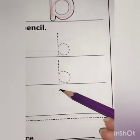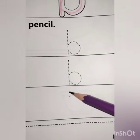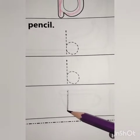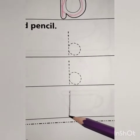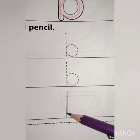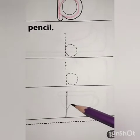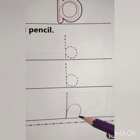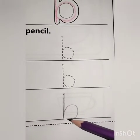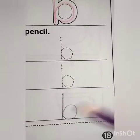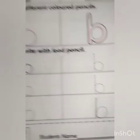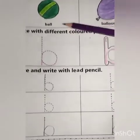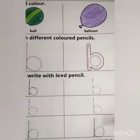One more time practice. Start from the arrow, come downwards, go upward and make a semicircle. It makes B — B, ball, B, balloon.